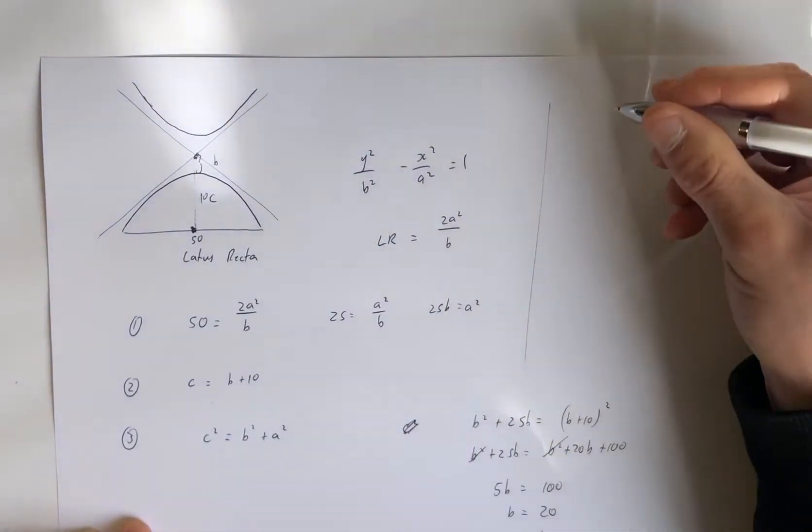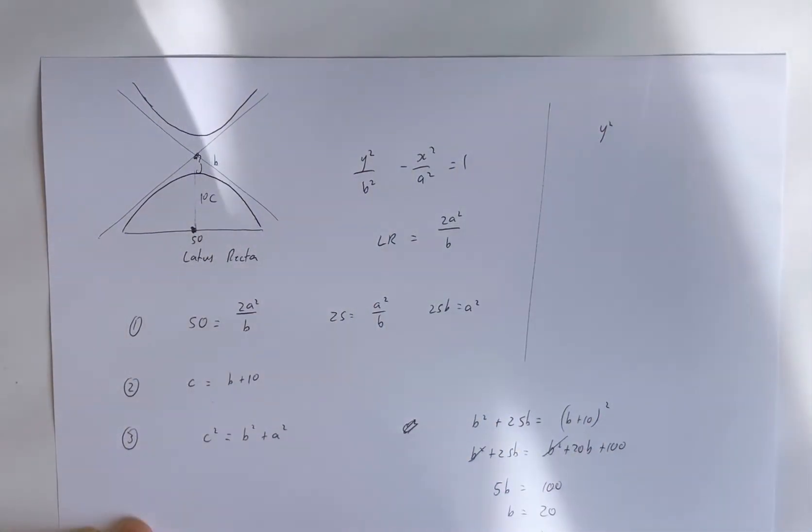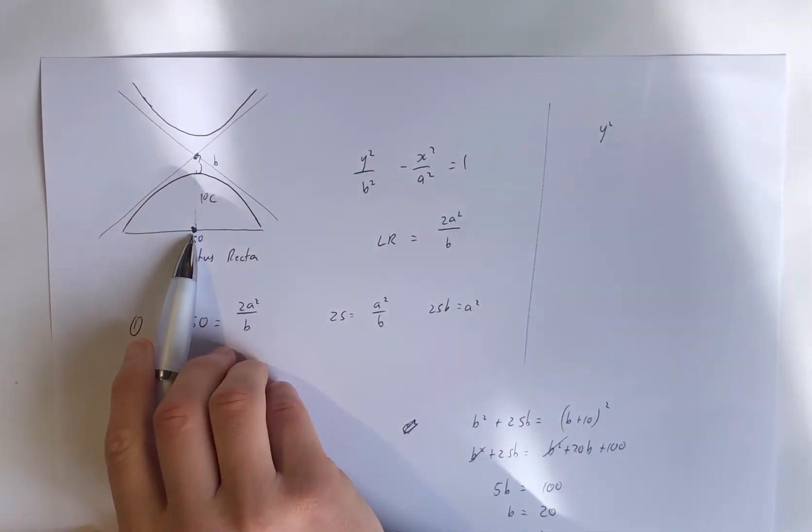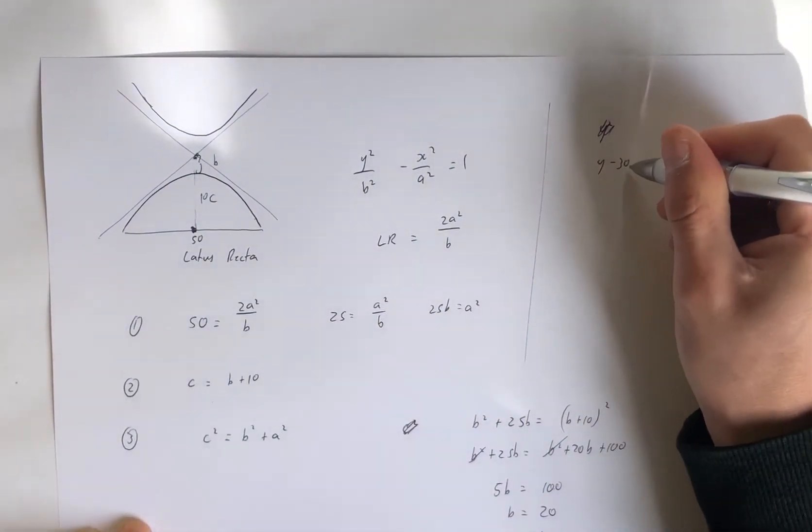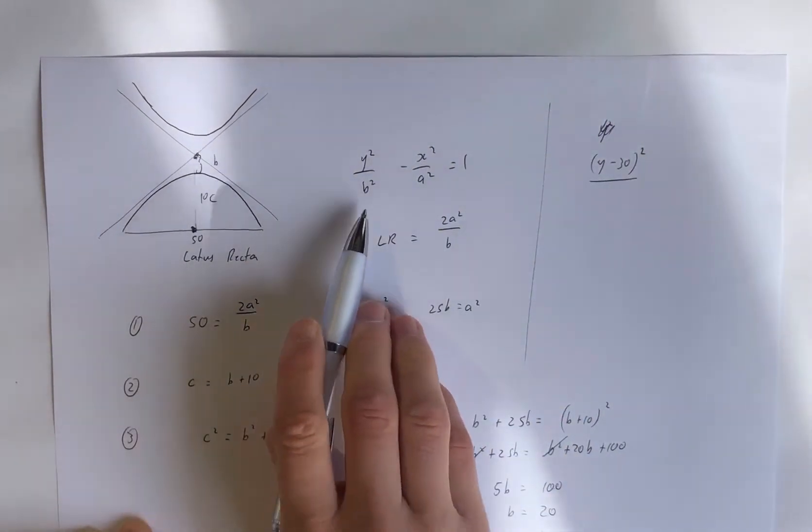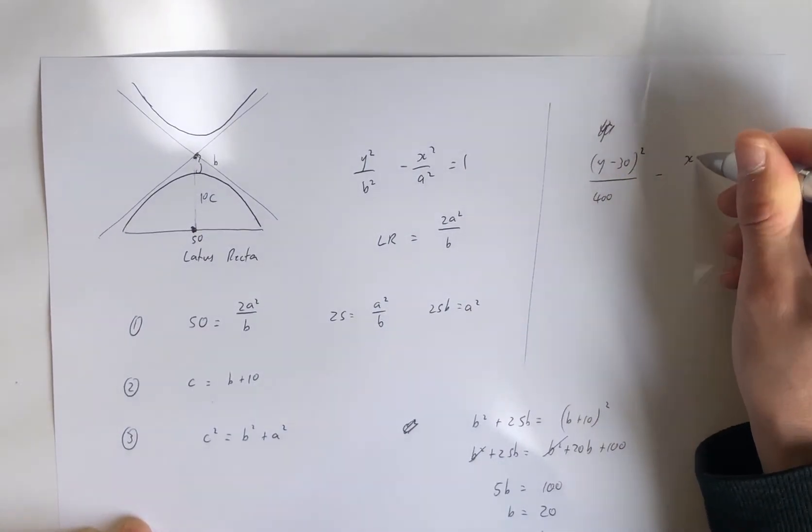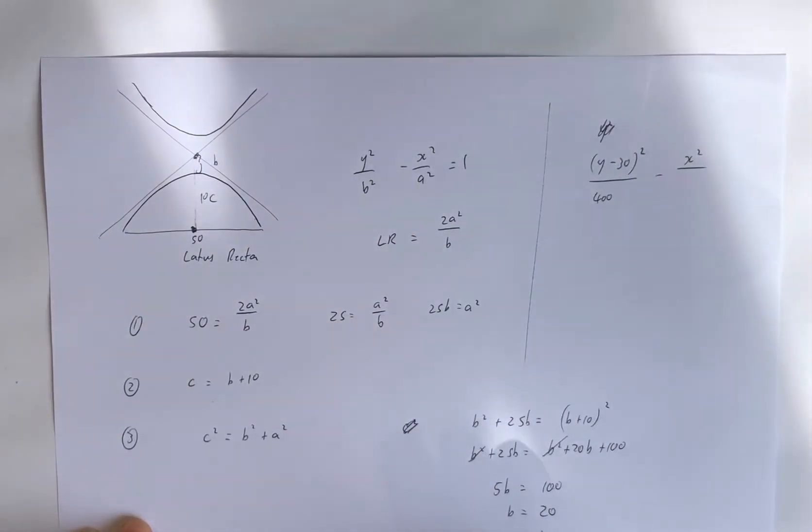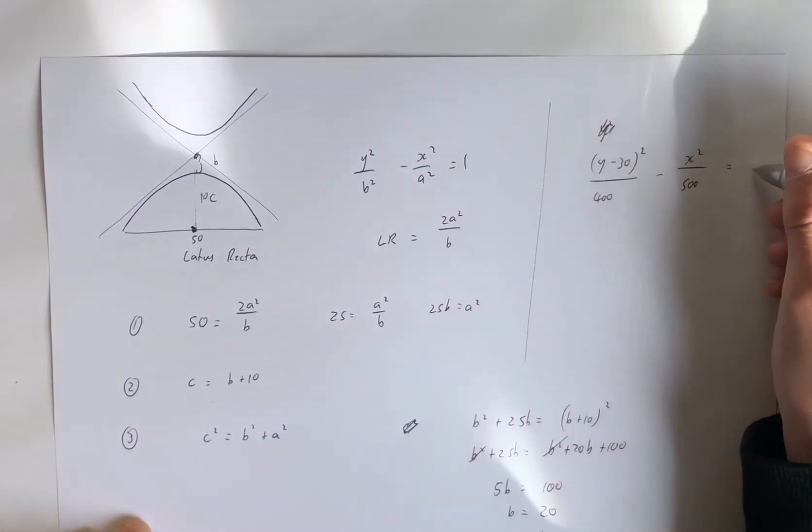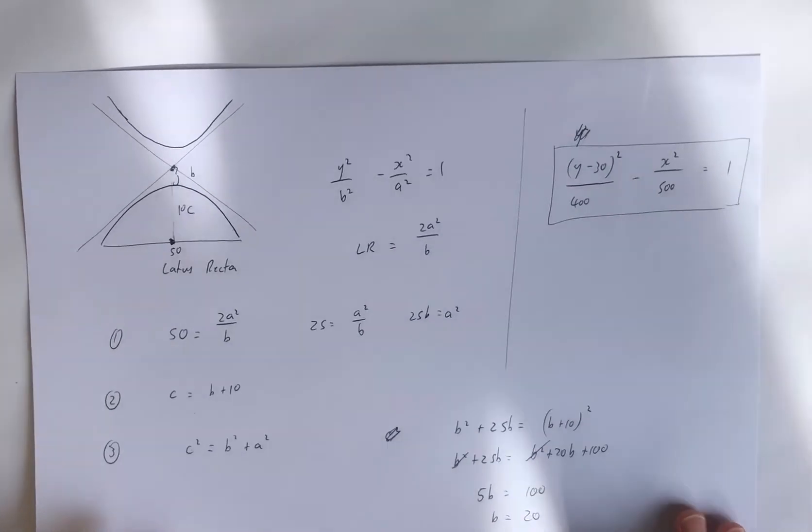And so our equation for a hyperbola is y squared. Well, we have to be careful here because I do have a vertical shift. So I have to shift that up by c. So that's (y minus 30) squared over b squared, over 400, minus x squared over a squared, so that was 500, and that equals 1. And now we have our hyperbolic roof design. And that is very tricky.